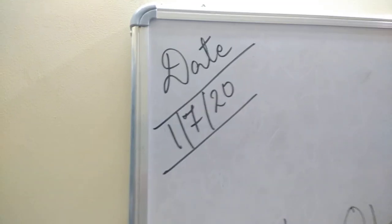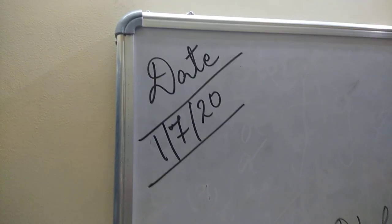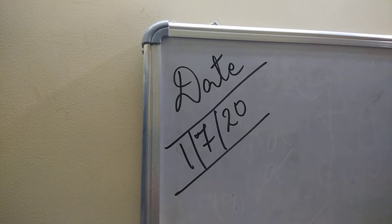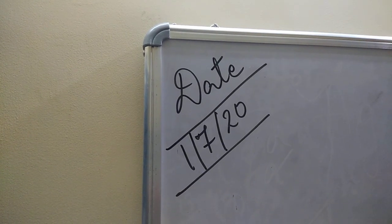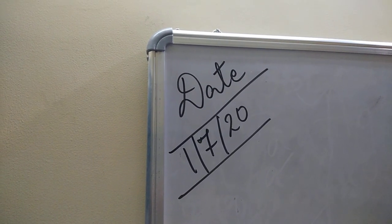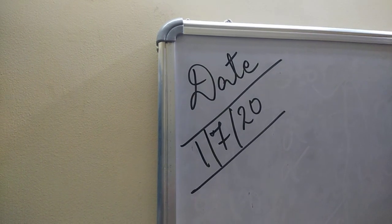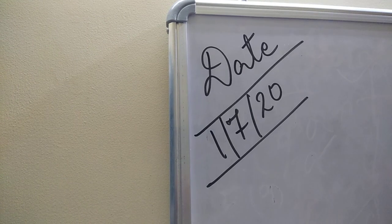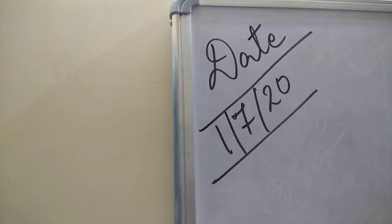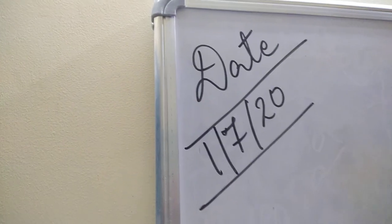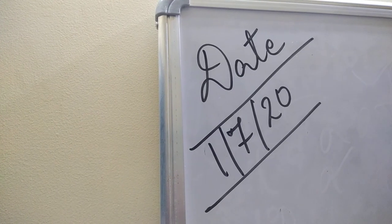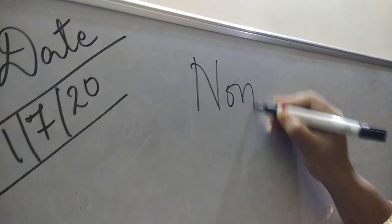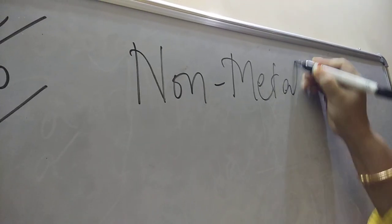Let's start the new topic. As I already told you, metals react with oxygen to form metal oxide, and metal oxide reacts with water to form metal hydroxide. Today we will study what happens when non-metals react with oxygen. The general formula: non-metals react with oxygen.